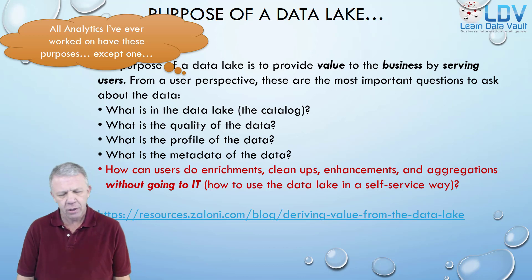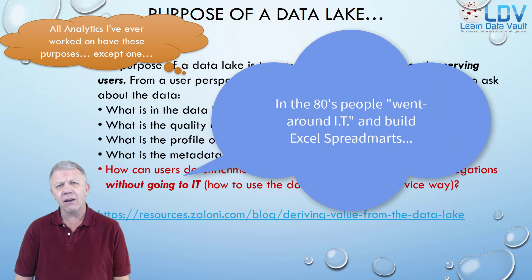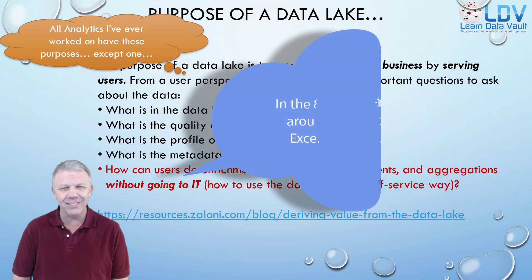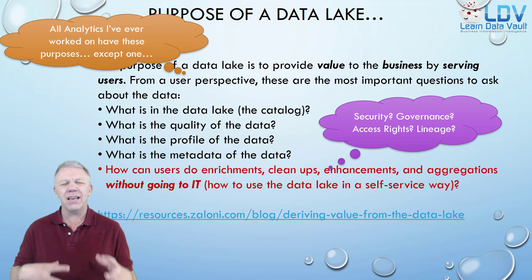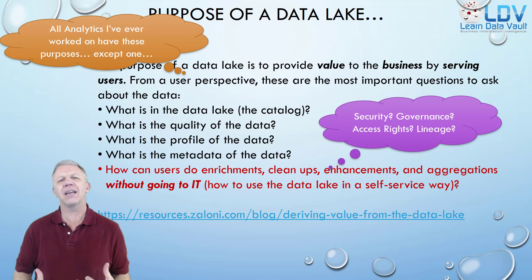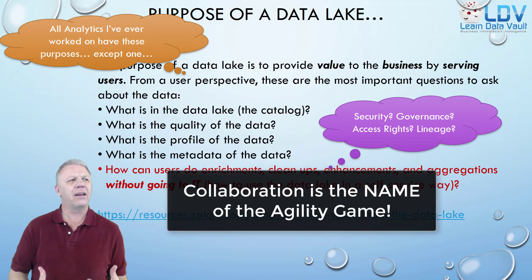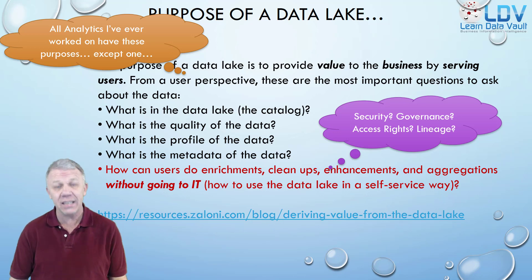If you don't have IT — no CTOs or CIOs — and you go around IT, how are you going to get this stuff installed? More than that, are you saying you don't need governance, security, access rights, or lineage tracking? IT has to work with business users in order to make a data lake whole. This is the whole idea of agility and collaboration. IT is a part of the business — IT is the business.